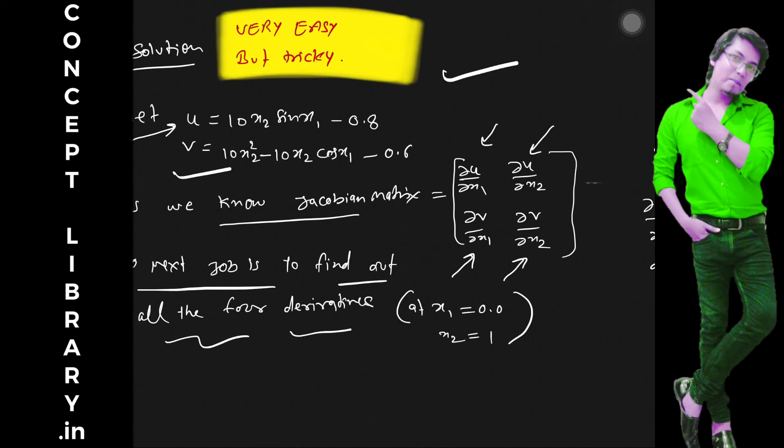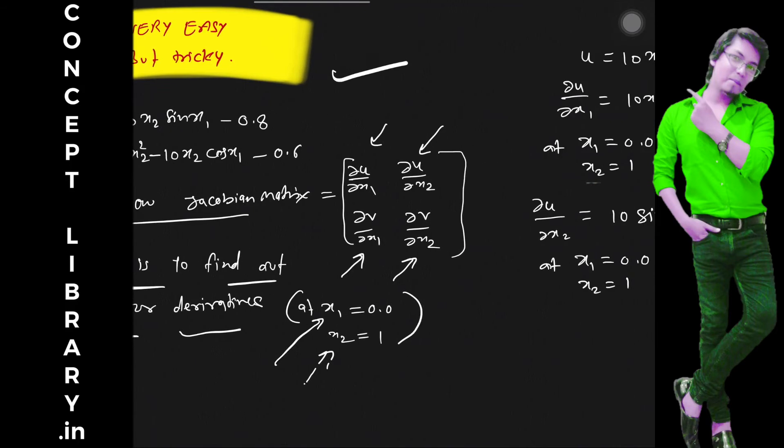So next job is to find out all the four derivatives at x1 is equal to this and x2 is equal to this, means differentiate respectively and put x1, x2 values.